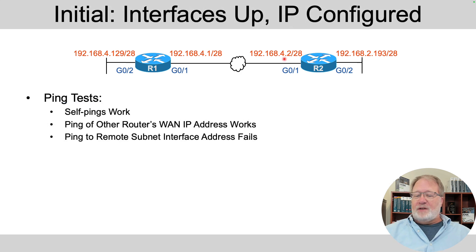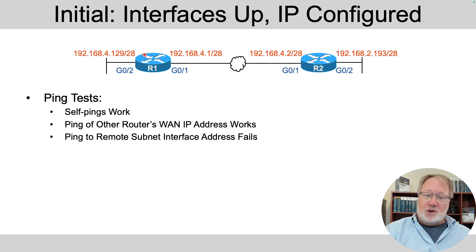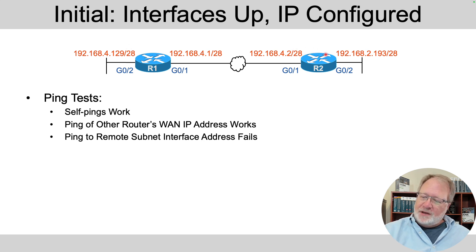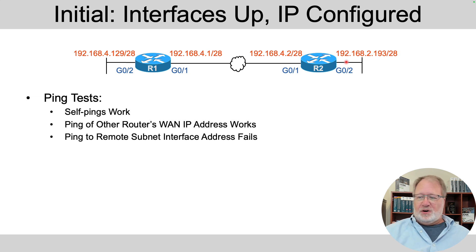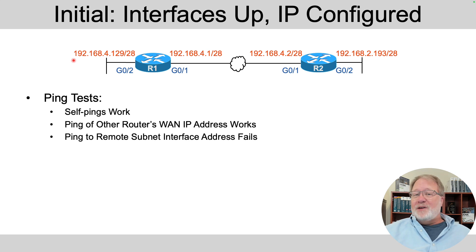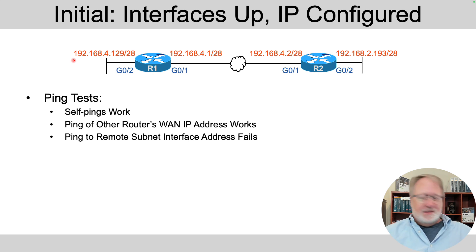When you open up the Packet Tracer file and start, you could do a few ping tests. R1 should be able to ping its own IP addresses because they're configured and the interfaces are up. R2, likewise, should be able to ping its own IP addresses. They should also be able to ping each other's WAN IP addresses because they each have a connected route to that center subnet. What won't work is R1 pinging the far-away interface's IP address on R2, and vice versa, because there's no OSPF config — there's no way for them to learn routes to those destination subnets. Once you configure the lab, those routes will be learned and those pings will work.